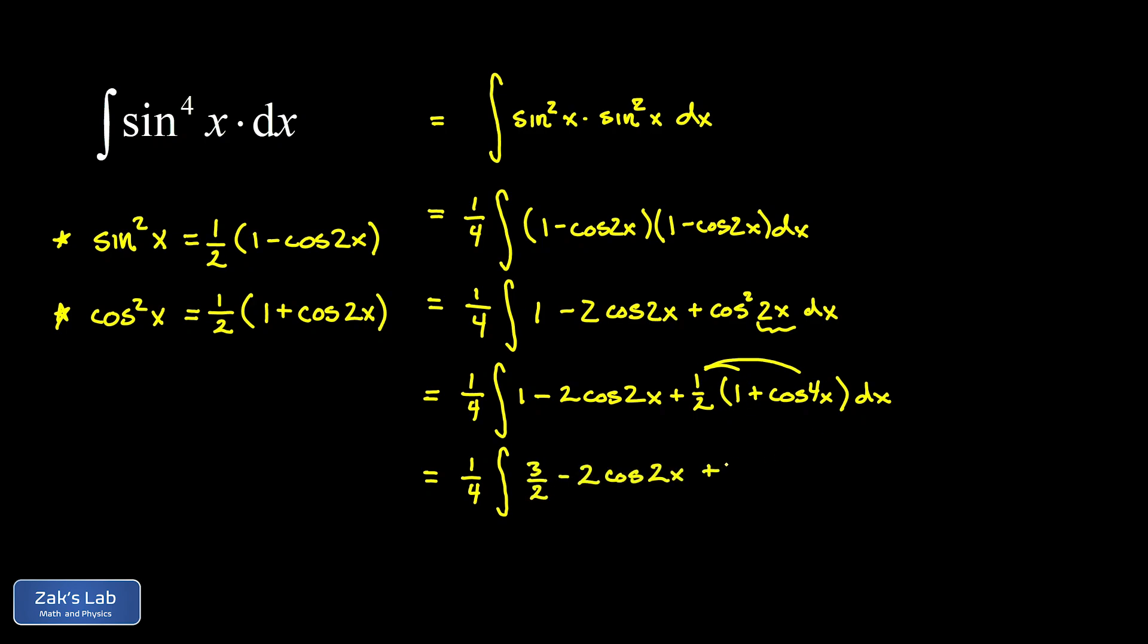Then the second term is a one half times the cosine of 4x. Now every one of our terms has a guessable anti-derivative. The first one, the integral of three halves gives me three halves x.